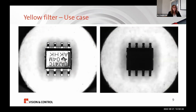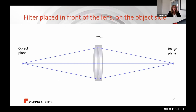Here is an interesting application for a yellow filter: the illumination uses blue light, and the object is placed on a fluorescent layer which reflects yellow light. Because of the filter, the blue light is blocked and you get a very contrast-rich image.